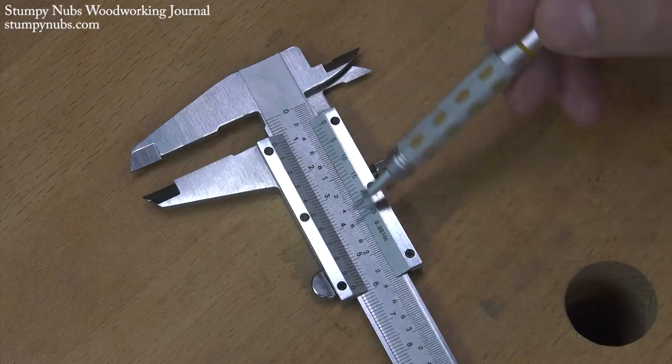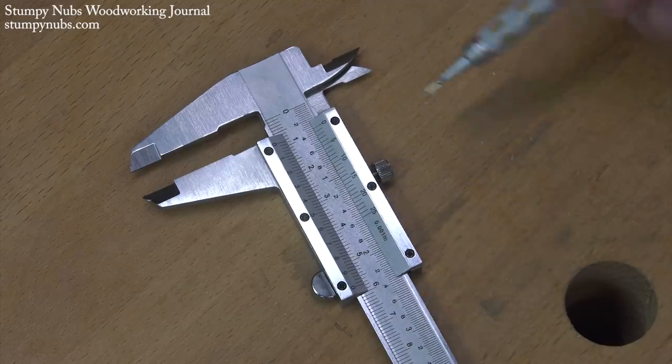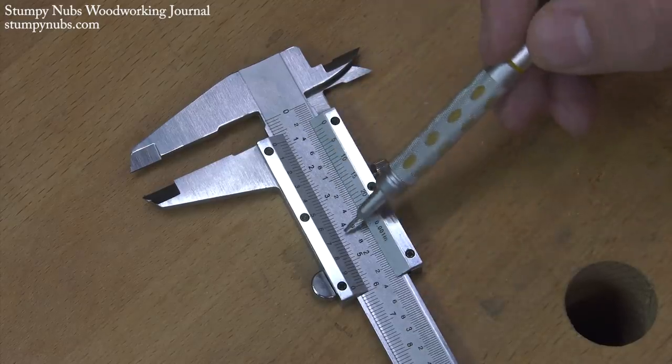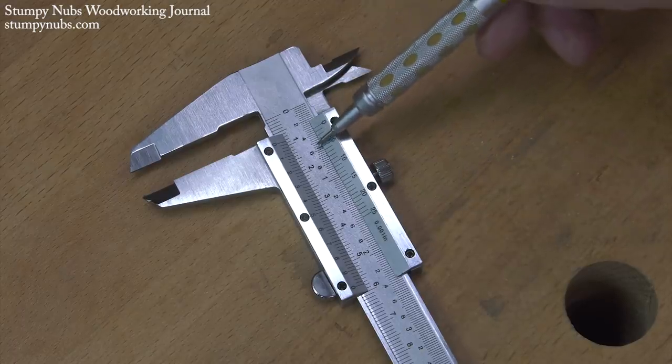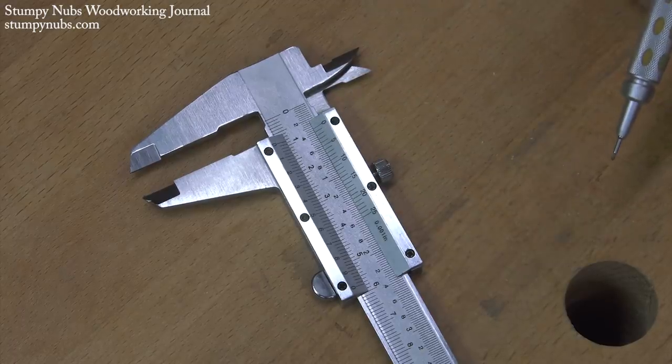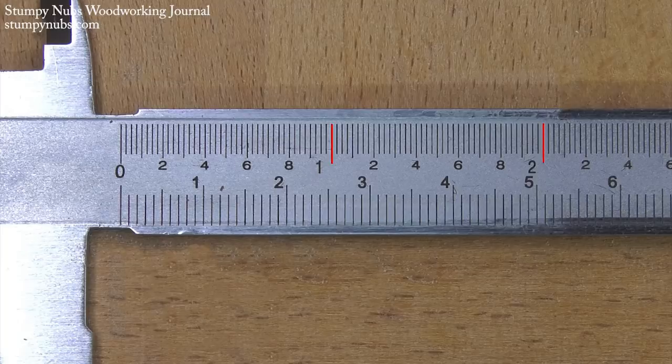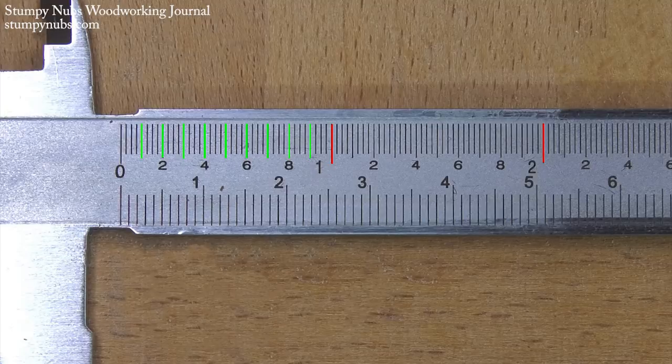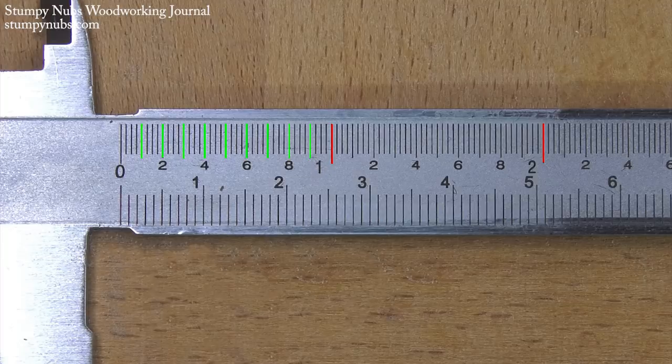For example, the scale on the body of this caliper is divided into inches and centimeters. Now let's focus on the inches at the top of the main scale for a moment, then we'll talk about the metric. Each inch is divided into ten smaller increments, and each of those is divided into four increments that are smaller yet. So if these are inches and these are tenths of an inch, what are these?